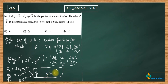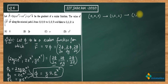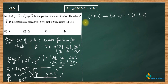Now, it is given that we have to move from (0,0,0) to (1,0,2) and then to (1,1,2). This is our path l. We have to integrate f dot dr over this whole path l.